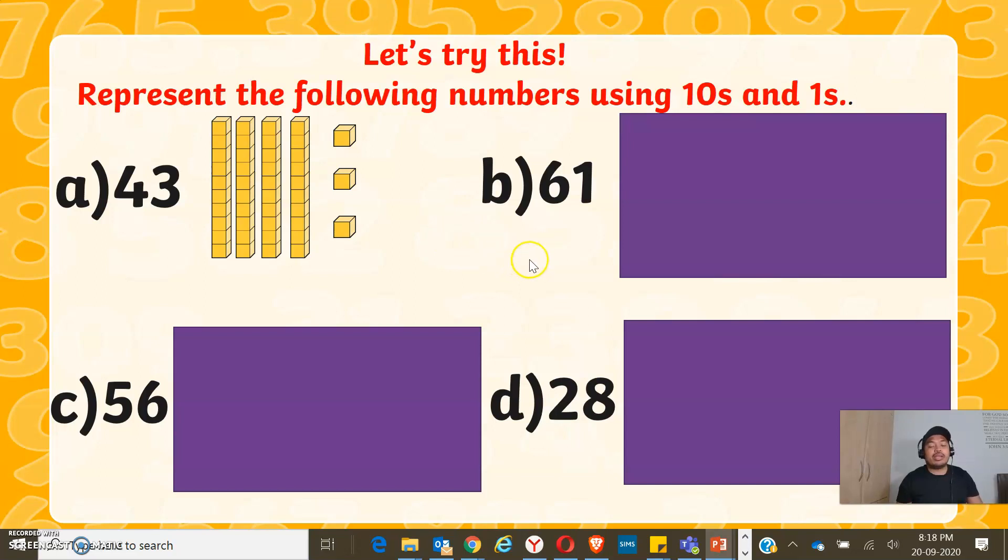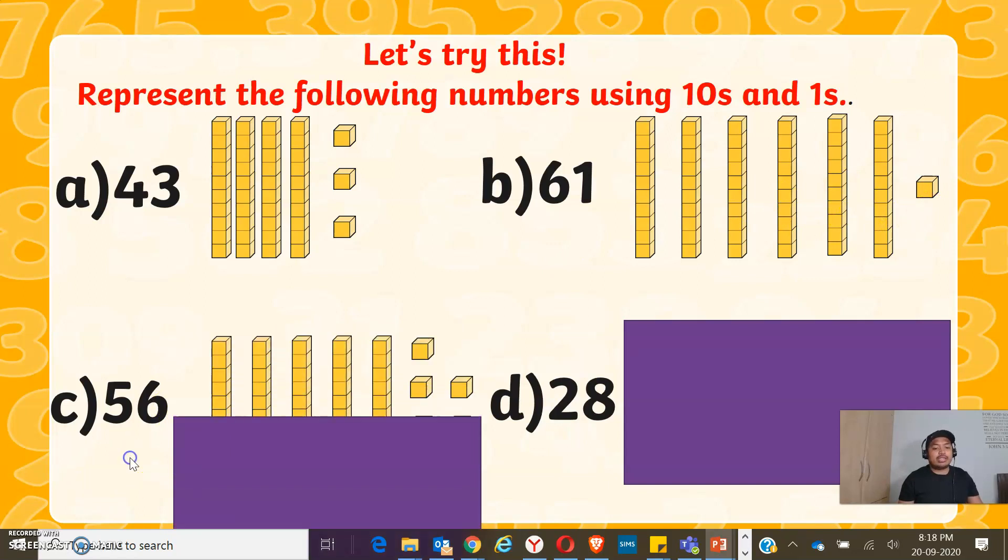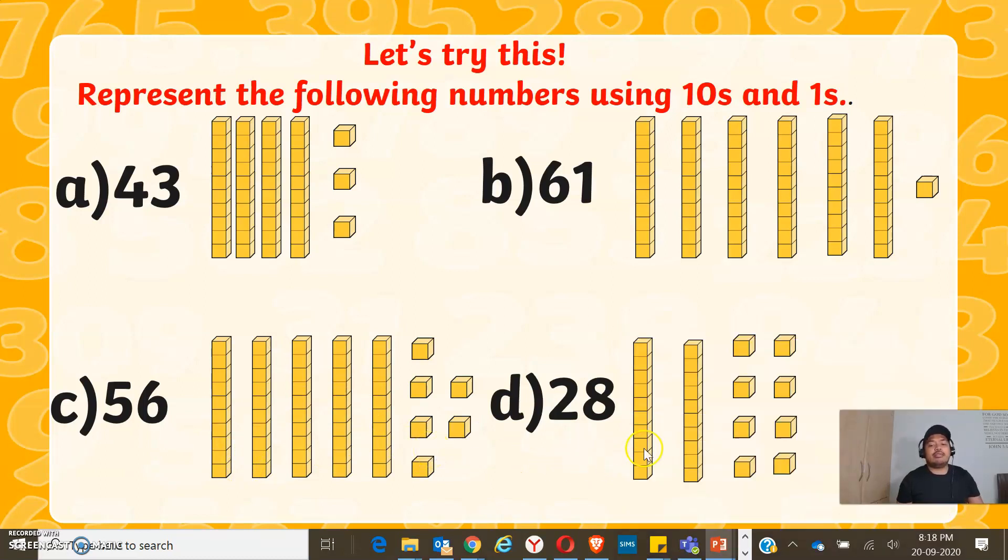Time is up. Now for 61, we can have 6 counters of 10 and 1 single counter for ones. For 56, we can have 5 counters of tens and 6 single counters. For 28, we can have 2 counters by 10 and 8 single counters for ones.